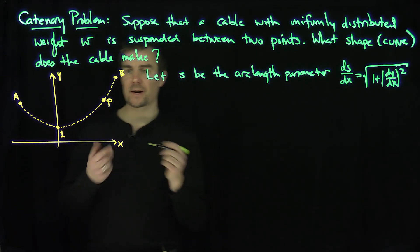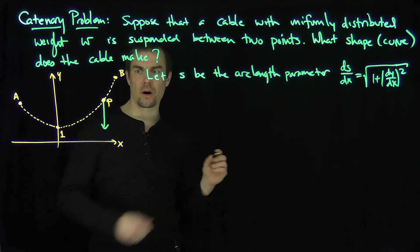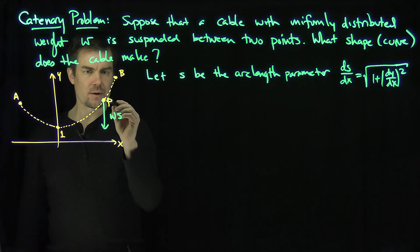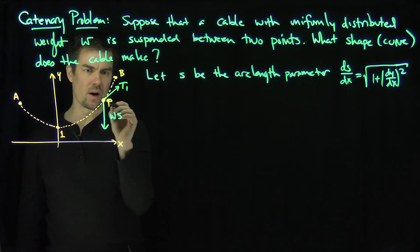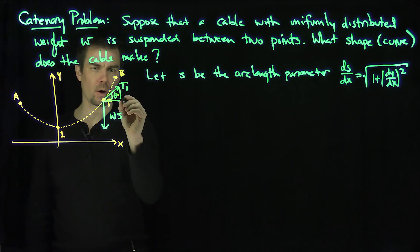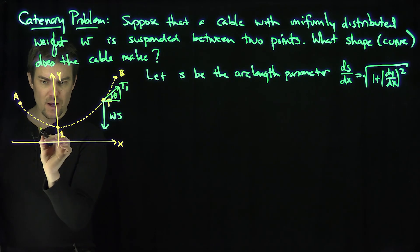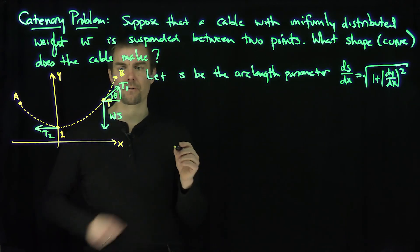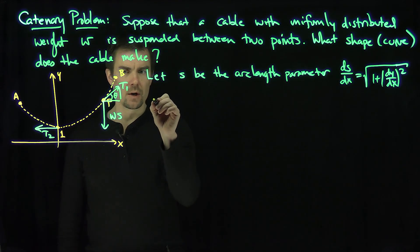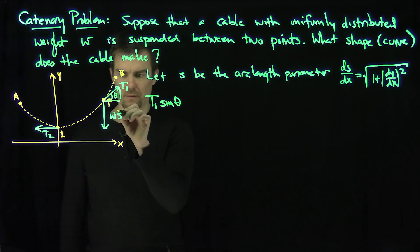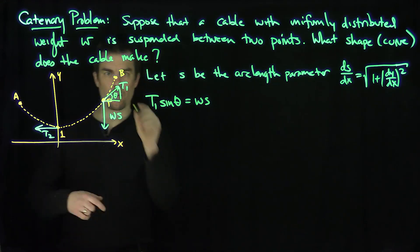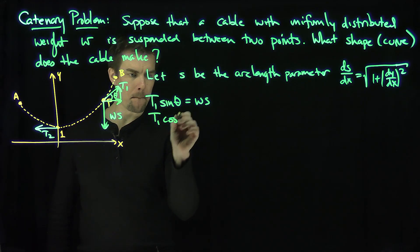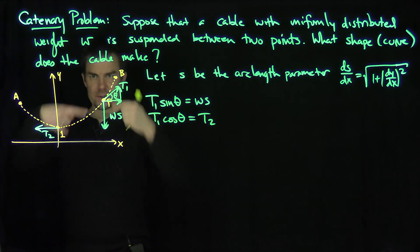There are several different forces acting on this point. There is the weight times the arc length parameter — that's one force acting on that point, the force of gravity moving down. There's also a tension T1 at that point, which can be decomposed into a vertical and horizontal component using angle theta. And since this is the lowest point on the chain, there is a horizontal tension T2 going in that direction. Balancing these forces: the vertical component T1 sine theta equals W times the arc length parameter s, and T1 cosine theta equals T2, the horizontal component.